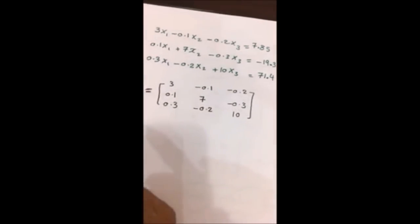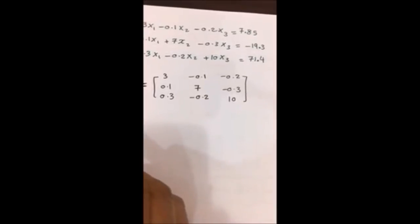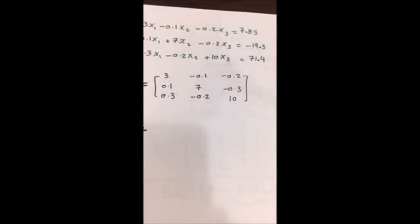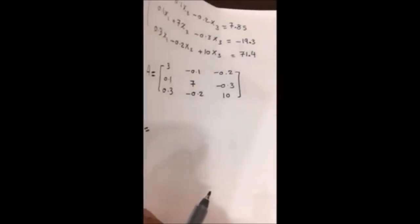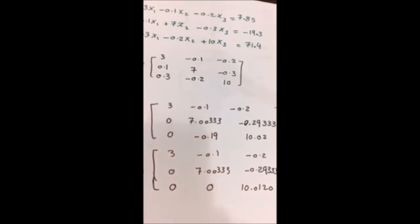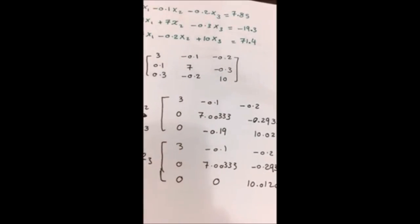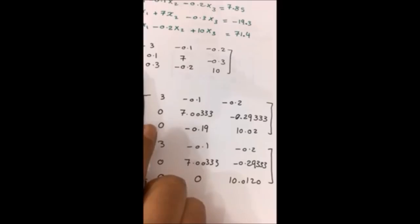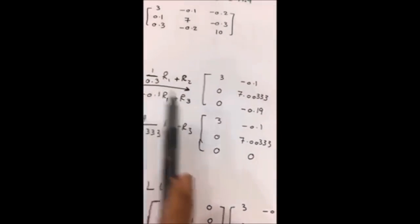الحين هنبدأ نحسب الـ U اللي هي Upper Triangular Matrix. نبدأ بتطبيق طريقة الـ REF أو Row Echelon Form على المصفوفة A. الرقم الأول في المصفوفة A هو 3، والمطلوب نخلي الأرقام اللي تحته أصفاراً.